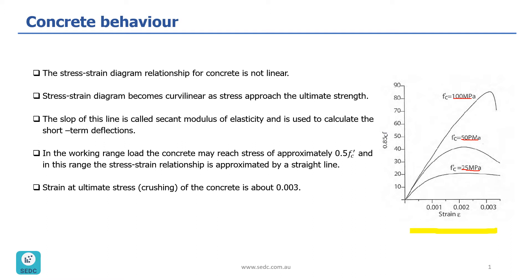These curves are a little different. For 25 MPa, the ultimate strain is happening somewhere here, and then after that there is a long way until the concrete crushes at the end. For 50 MPa, the ultimate strain is happening at a higher level, and then the concrete is going to lose its strength and fail.